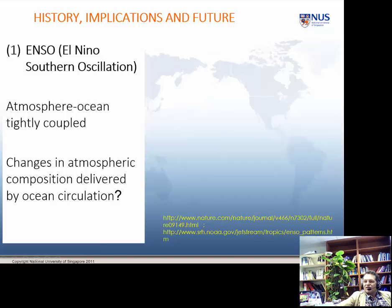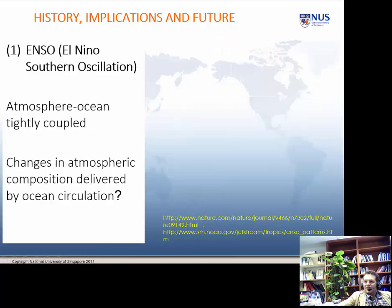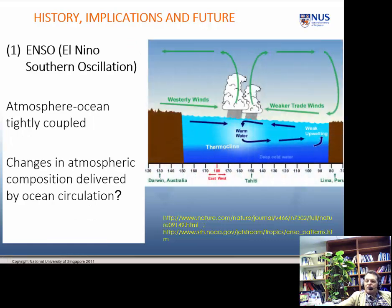The previous normal situation is a La Niña year. You can see that they are really rather different. Changes in atmospheric composition are being delivered by oceanic circulation — this is a very linked system, and that is both the beauty of it and the worry of it.